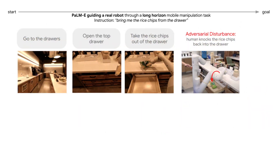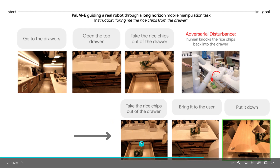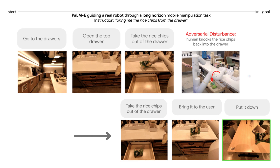This example in three dimensions: PaLM-E operating in a kitchen. Go to the drawers, identify the drawers, identify which drawer you can open, open it with a specific technique, take out the content, analyze the content of the drawer, look for some chips, take out the chips. Now another human comes in and disturbs — kicks the chips back into the drawer. No problem: we have continuous sensor input to our system. We identify that things have changed, that the chip is still in the drawer, bring it to the user, and put it down. We have live action happening.